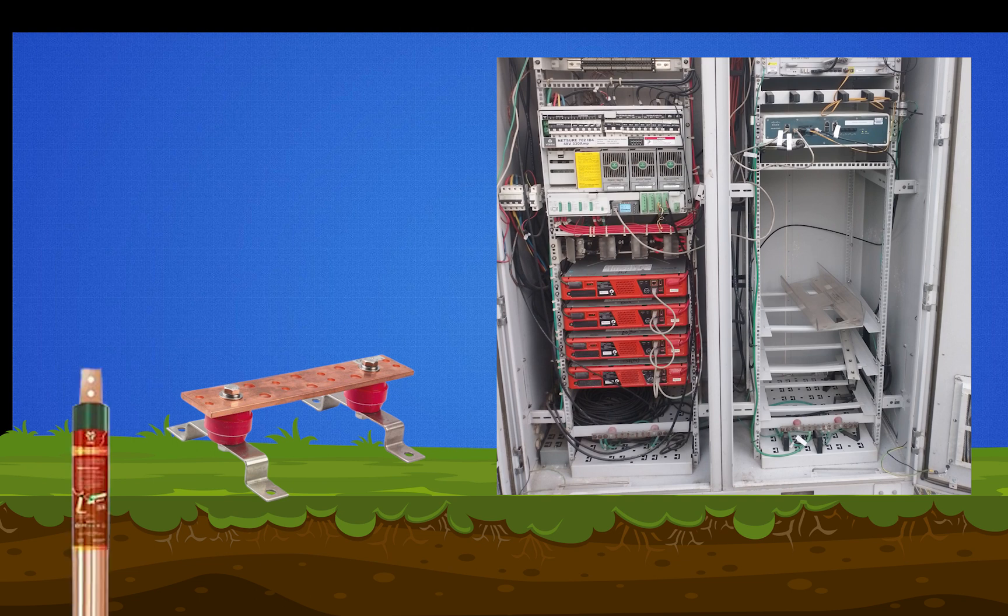Grounding wires, similar to those used for the internal grounding bar, are connected to the external grounding bar to establish a secure path for electrical currents to flow into the ground, preventing any potential damage caused by surges or lightning strikes.